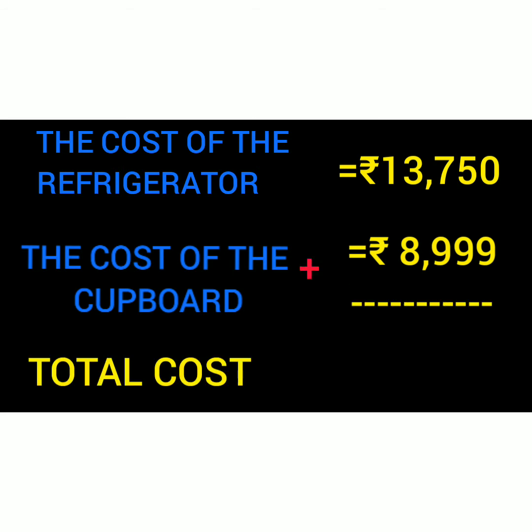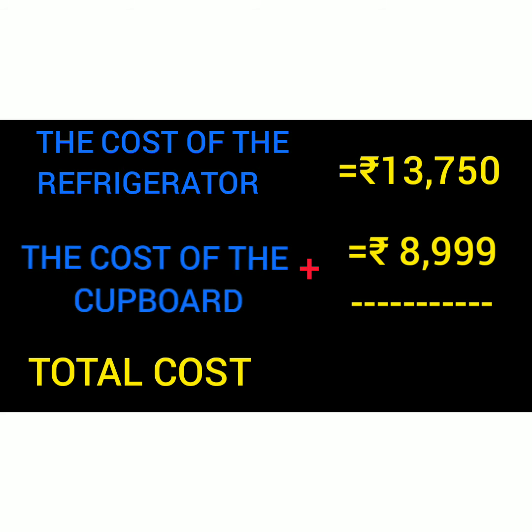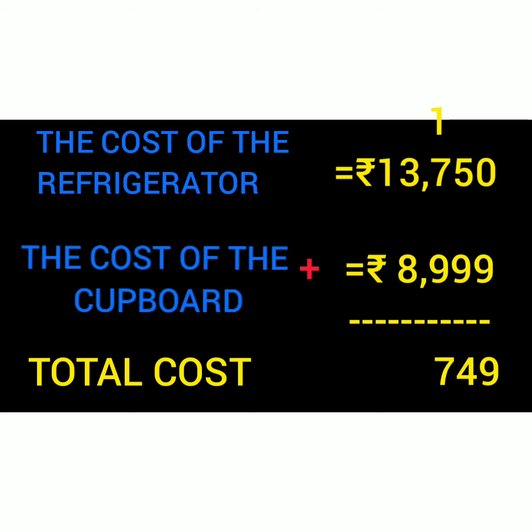Let us add now, starting from the unit side. 0 plus 9 is 9. Then 5 plus 9 — keep 5 in your mind, 9 in your hand, add them: it comes 14. So write 4 there, 1 carry over. Then 1 plus 7 is 8, and 8 plus 9 is 17. Write 7 there and 1 carry over.